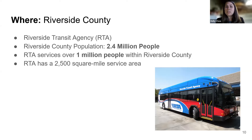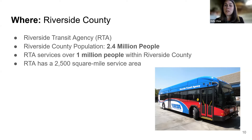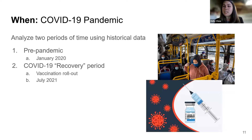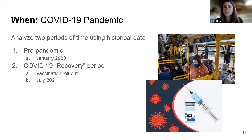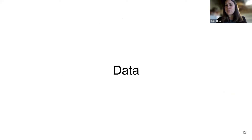The area we looked at was Riverside County, specifically the Riverside Transit Agency, which services the western portion of Riverside County. The population is 2.4 million people in Riverside County, and RTA serves about 1 million of this population, covering a 2,500 square mile radius. For our time periods, we studied two: pre-pandemic, which we defined as January 2020, and a recovery period defined as when vaccinations rolled out and restrictions were lifted — July 2021. I'll pass it off to Preston to cover the data.